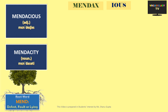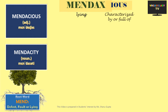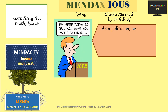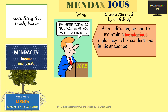Our last word based on this root is 'mendacious.' Since 'menda' means fault and '-ious' is a suffix meaning characterized by or full of, one who engages in faulty or defective behavior and is given to lying is referred to as a mendacious person. The word is used as an adjective to describe someone who is not telling the truth or is lying. For example: as a politician, he had to maintain a mendacious diplomacy in his conduct and in his speeches, especially at the time of elections.